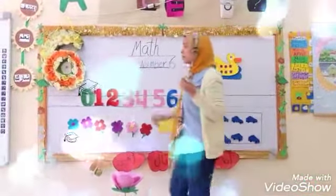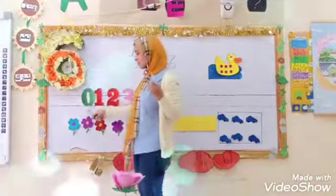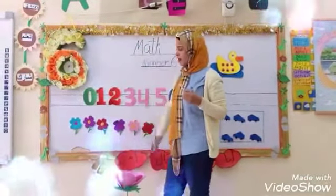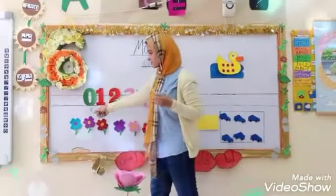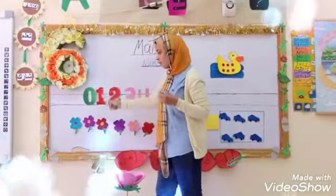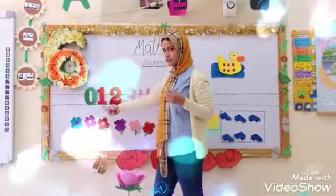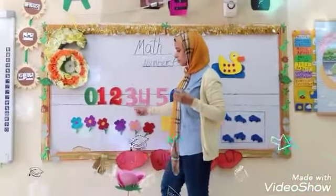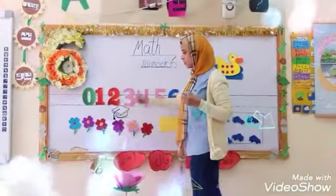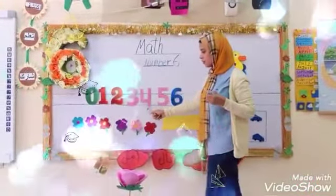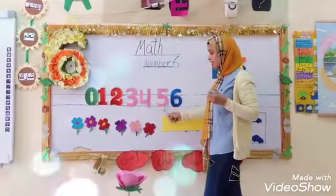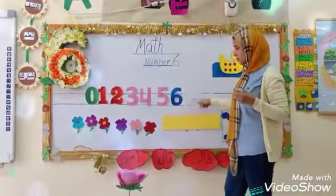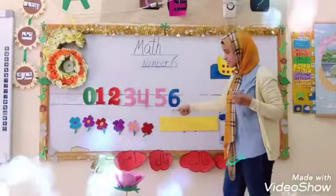How much do you remember? What is the first number? It's number 0. What's after 0? 1, 2, 3, 4, 5. What's after number 5? It's number 6.